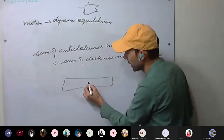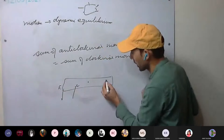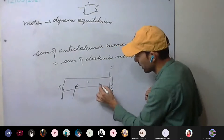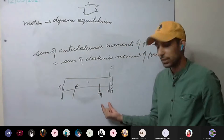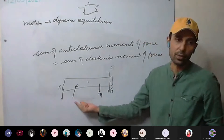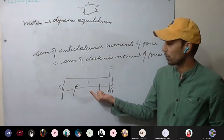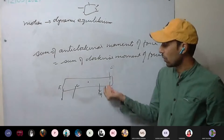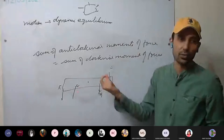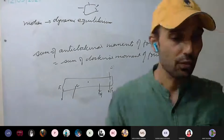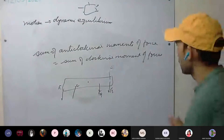For example, we have one body pivoted at a point. Forces F1, F3, F4 are acting at different positions. If we take the sum of all the anticlockwise moments and the sum of all the clockwise moments, they must be equal to each other — their algebraic sum must be zero. Then the body is said to be in a state of equilibrium. When the sum of anticlockwise moments equals the sum of clockwise moments, the body is in equilibrium. This is called the principle of moments.